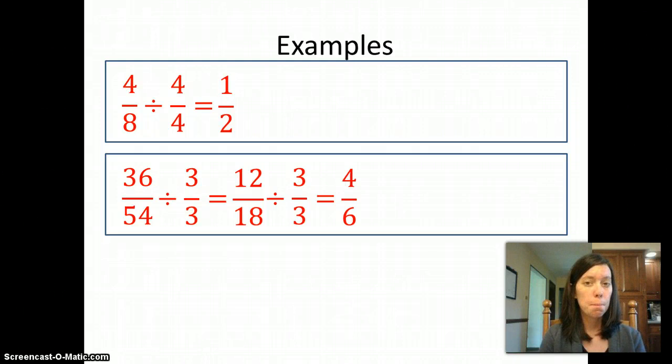Is that lowest terms? No, because 2 goes into both. So again, I'll divide out a common factor and that factor in this case is 2. So I divide 4 by 2 and divide 6 by 2 and I get 2 thirds.